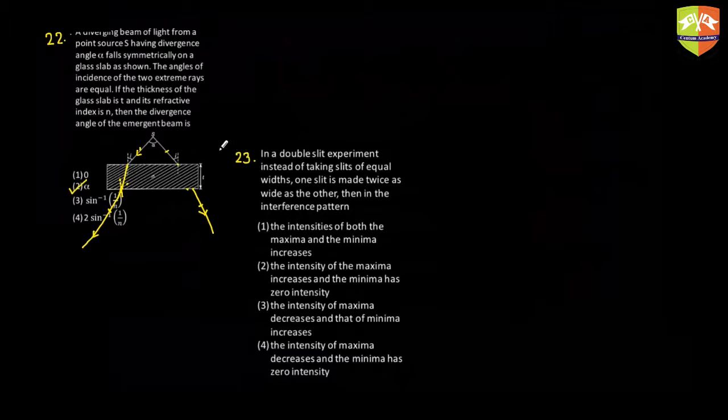Okay, what about 23rd? See, in 23rd, if you have equal widths, then intensity coming out from both the slits will be I0 and I0. If you increase the width of one of the slits to double, the intensity of one of the slits becomes 4I0, because area actually defines how much will be the intensity. So if you double it, intensity becomes four times. So 4I0 and I0. So this is I1 and this is I2.